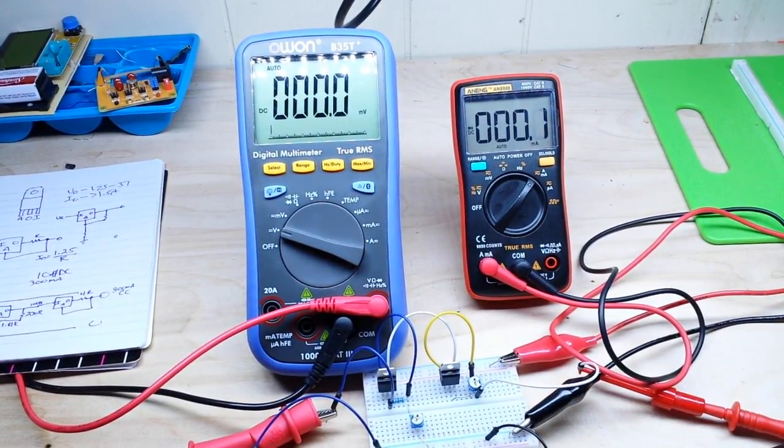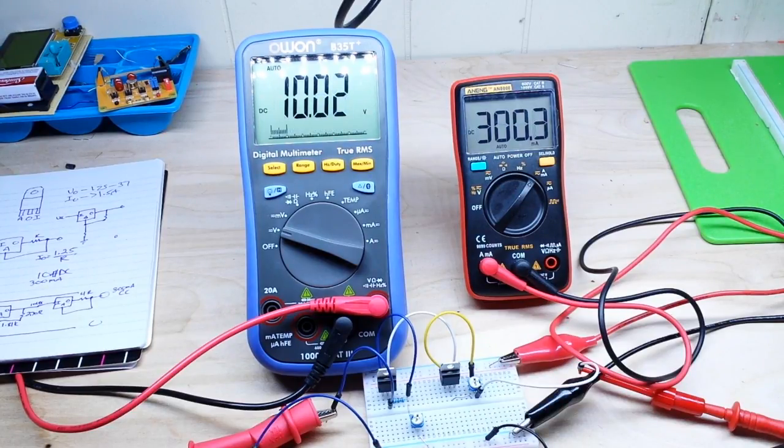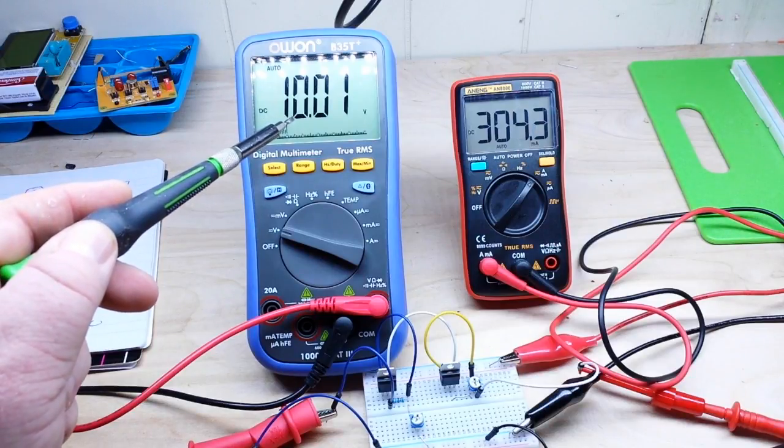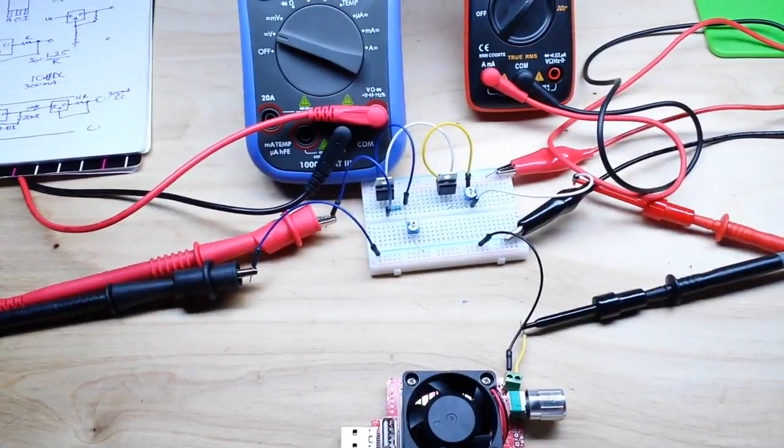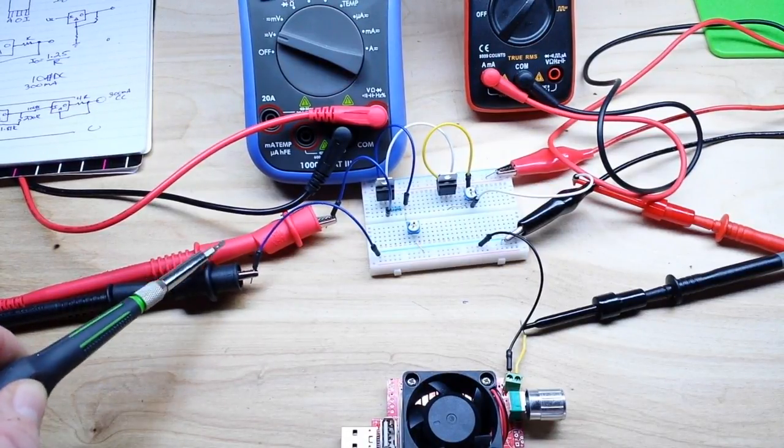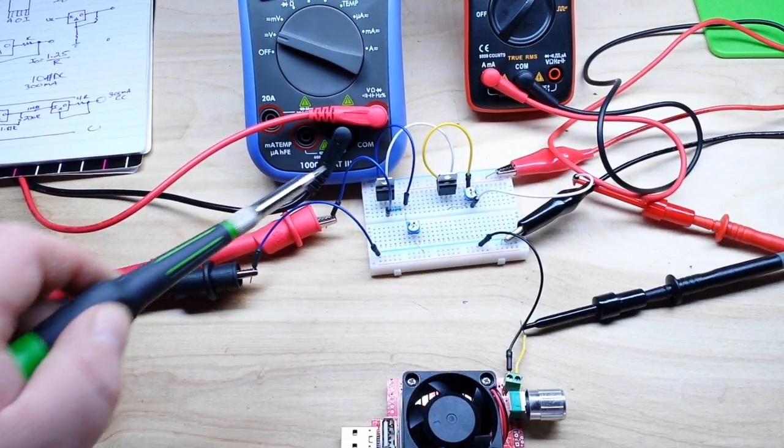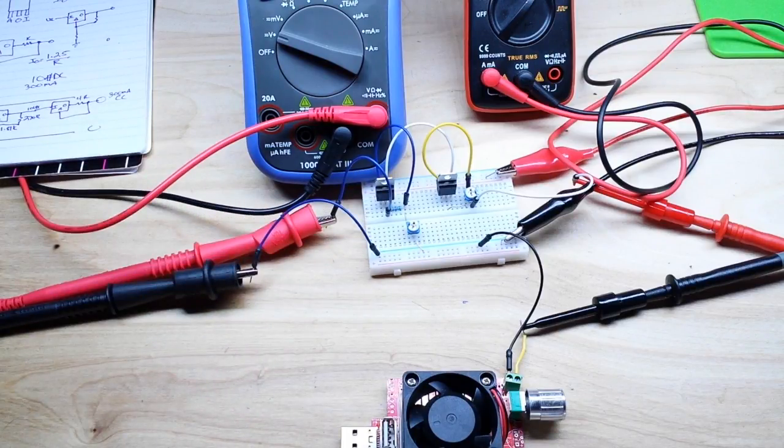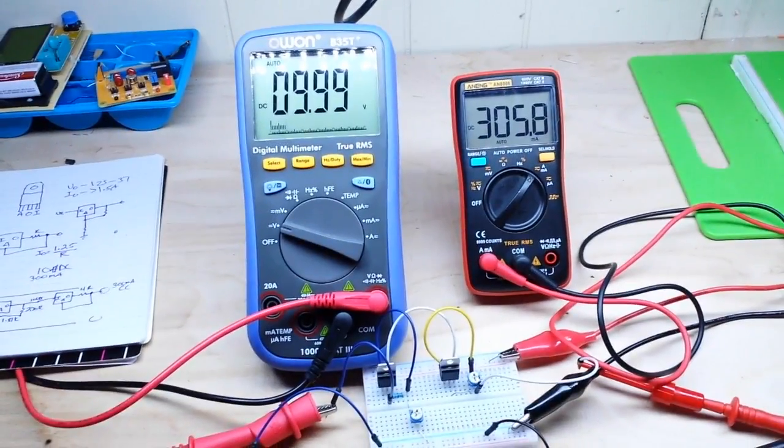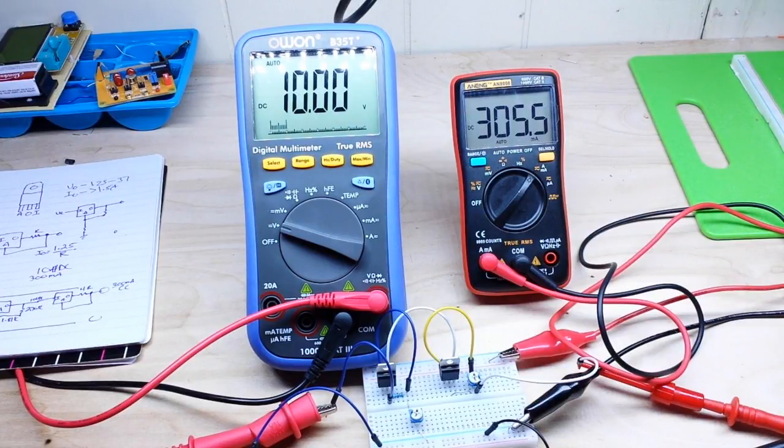So I'll turn on the bench power supply and you can see we've got 10 volts coming out of the first LM317 being measured right here, you see at pin two, the output pin. And we have, well, 305 milliamps.